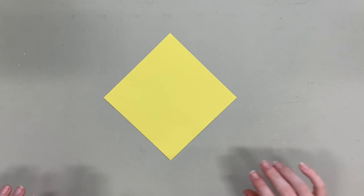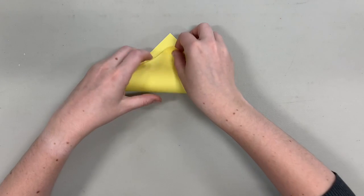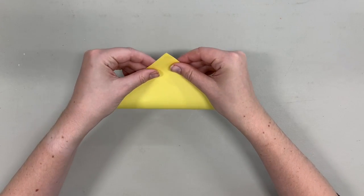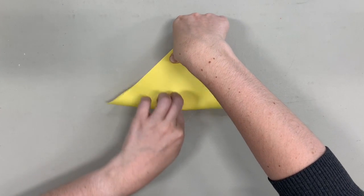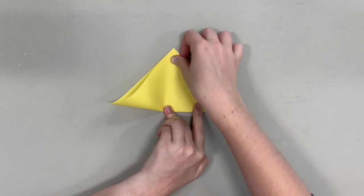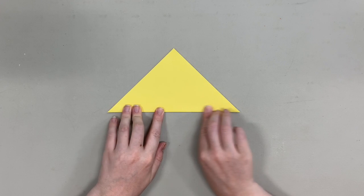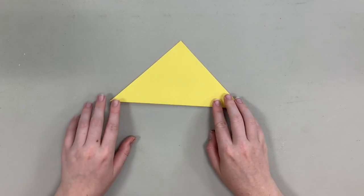For the first fold, take the bottom corner and fold it right up to the top. Line those up, press down, and then smooth it down towards the crease. Press down really hard so it looks nice and clean.